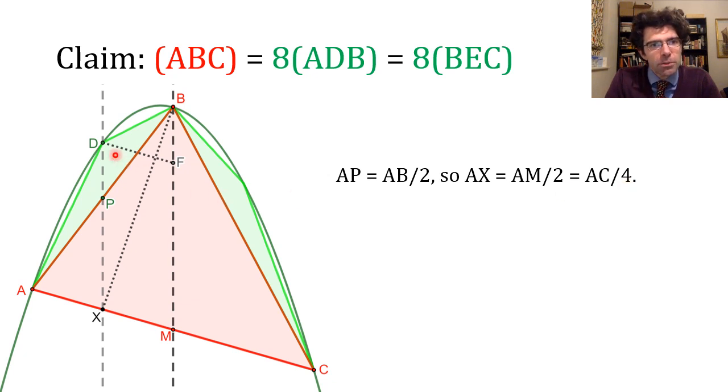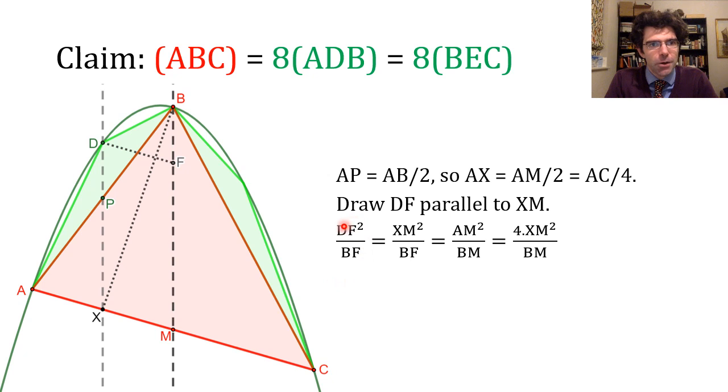Now we do a little construction. We draw in DF which is parallel to AC, and then consider the relationship of BFD and BMA, which are two examples of what we saw in the last slide. Remember that because M is the midpoint of AC, it must be parallel to the tangent at B, and FD will be the same. So we get DF squared over BF equals AM squared over BM.